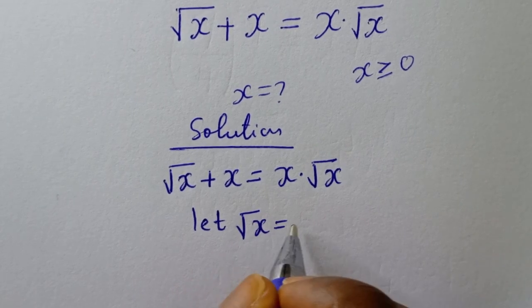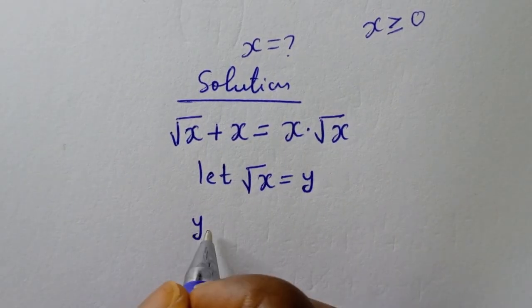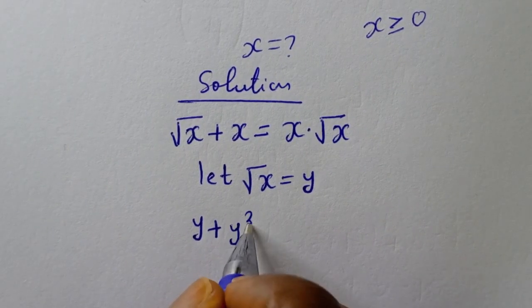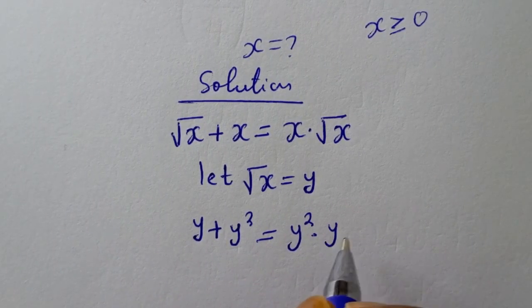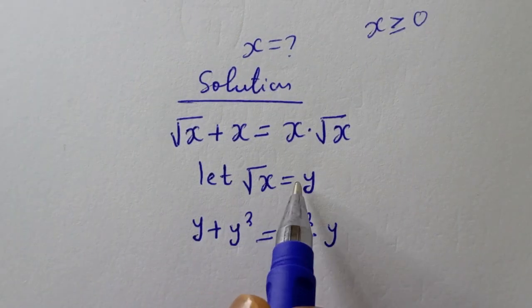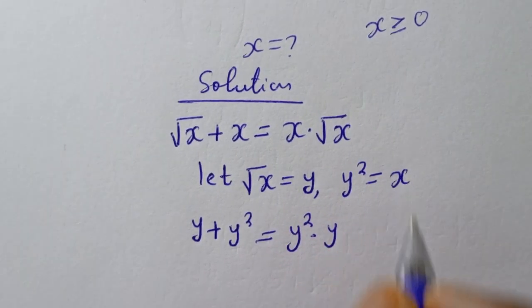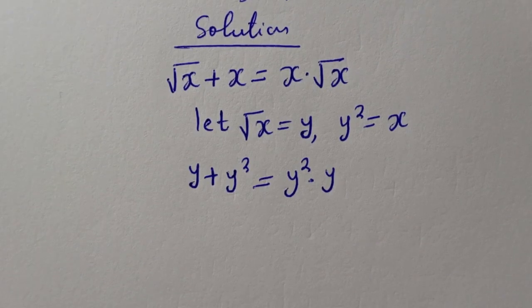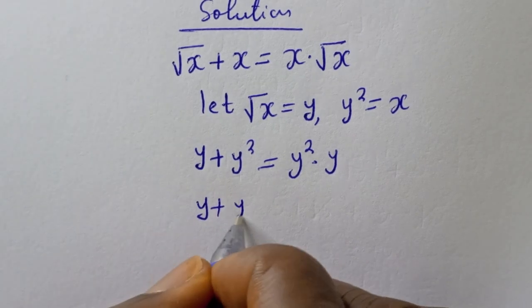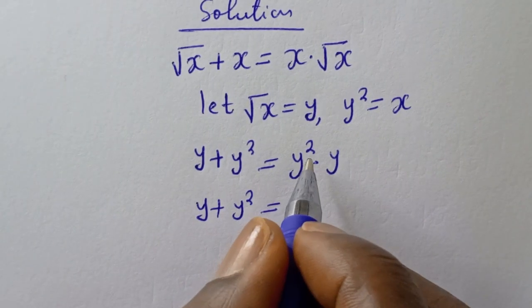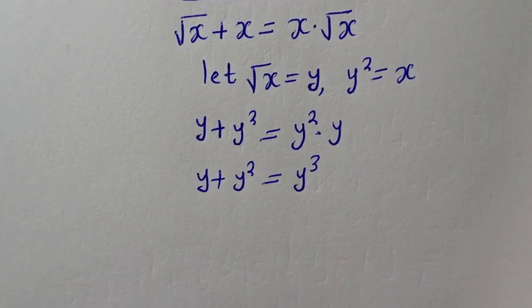Let square root of s equal to y. Then the equation becomes y plus y squared equals y squared multiplied by y, because square root of s equals y, therefore y squared equals x. So we have y plus y squared equals y cubed.